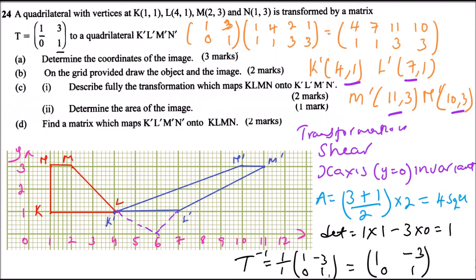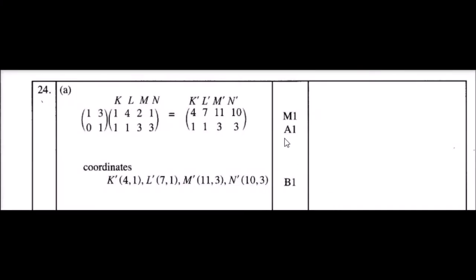Let's look at how marks are awarded. For Part A, you get one mark for the method — that is for multiplying the matrices. You get a mark for the correct answer. Those are two marks. You also get a bonus point when you write the coordinates in coordinate form from the matrix, so those are three marks scored in Part A.